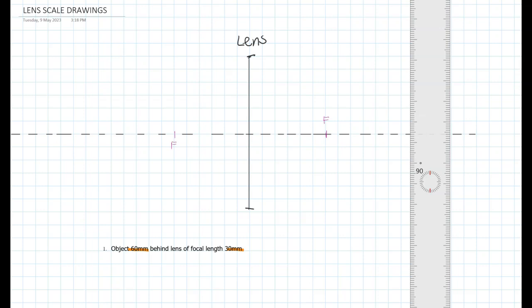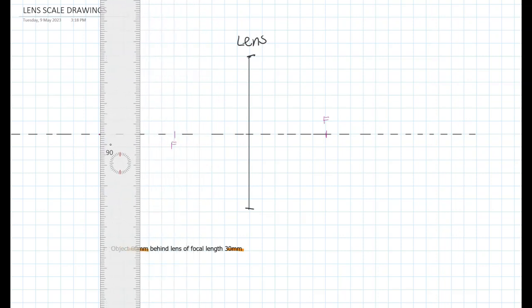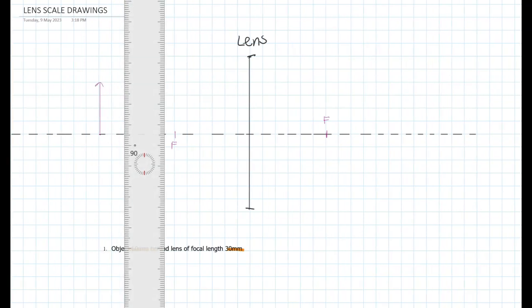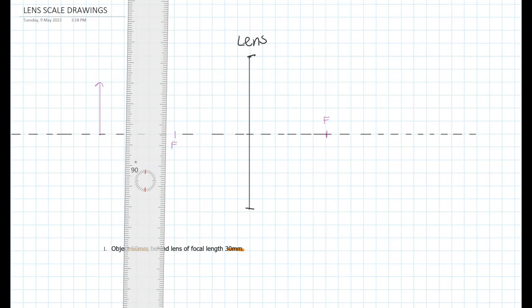Either side of the lens and the object is 60 millimeters behind so it is 10, 20, 30 so it appears here. And the trick to doing this is to draw the object on the principal axis so it starts on the axis and finishes up here somewhere. So let's draw it 20 millimeters big.